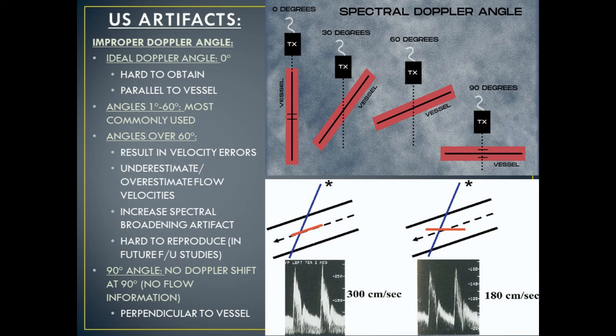Next, let's talk about ultrasound artifacts that occur due to improper Doppler angle. An ideal Doppler angle is 0 degrees — an angle parallel to the vessel — however, this is extremely hard to obtain. Because of that, angles of 1 to 60 degrees are most commonly used. When the angle is over 60 degrees, it results in velocity errors that underestimate or overestimate flow velocities, and they increase spectral broadening artifacts. They are also extremely hard to reproduce in future follow-up studies. When a Doppler angle of 90 degrees is used, no Doppler shift occurs, so there is no flow information. 90 degrees is perpendicular to the vessel.